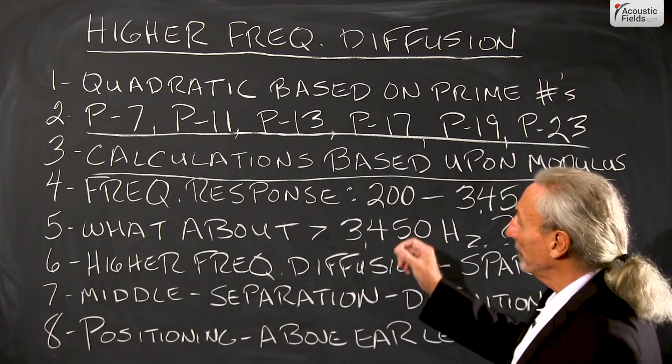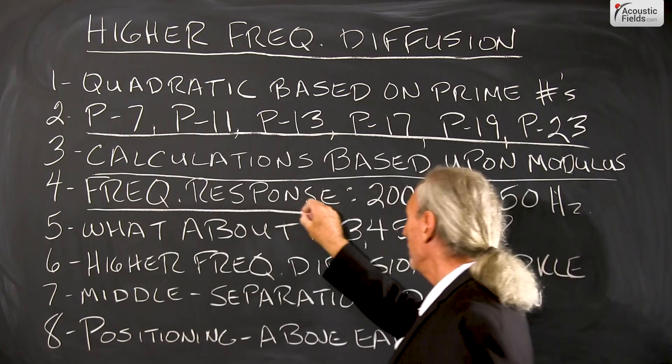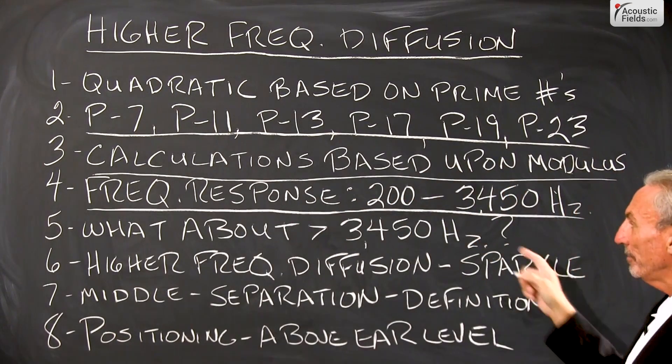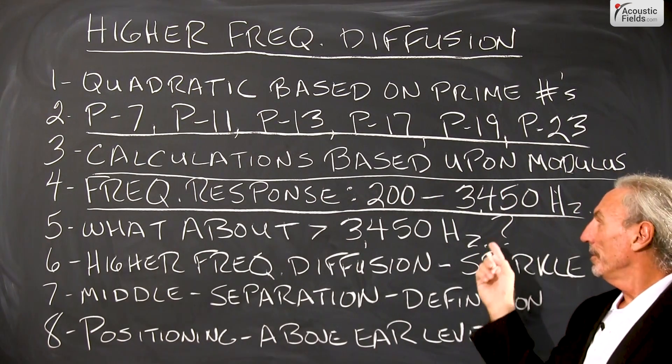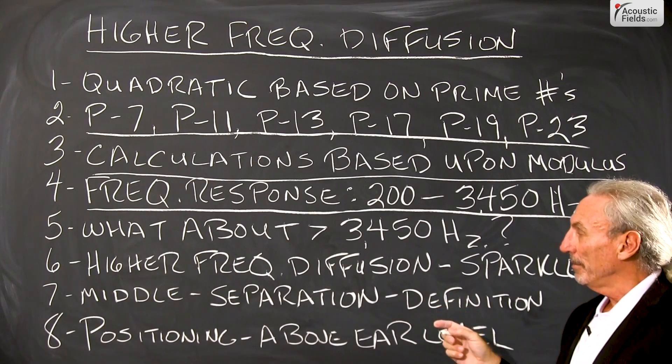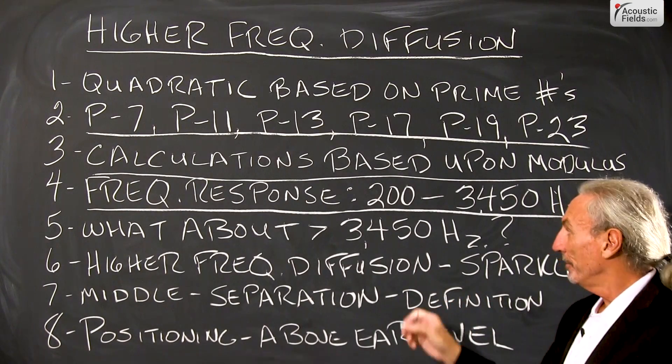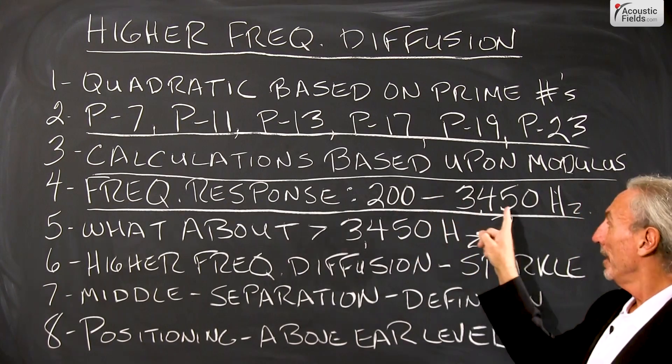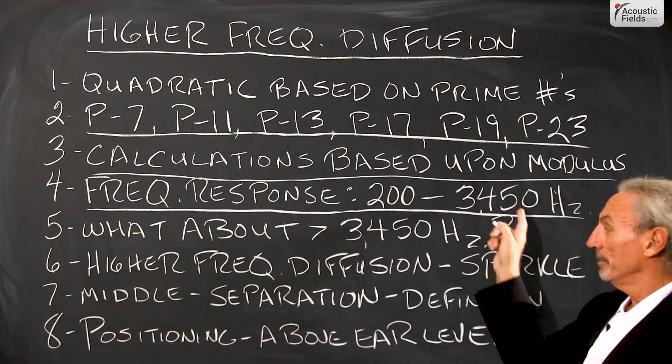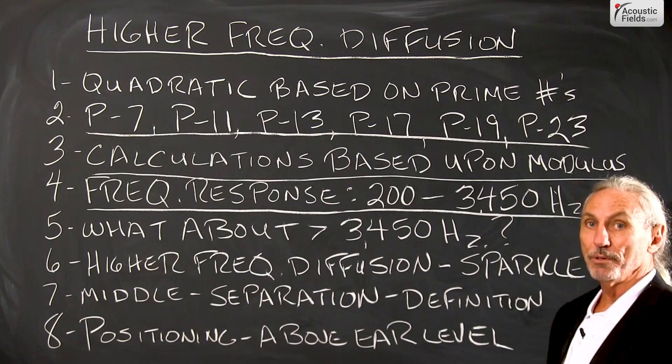The frequency response in most of our diffusers that we use on a regular basis averages from 200 to 3450 in frequency response and we know that the well depth of the diffuser determines the low end and the well width determines the upper frequencies at which the diffusion occurs.